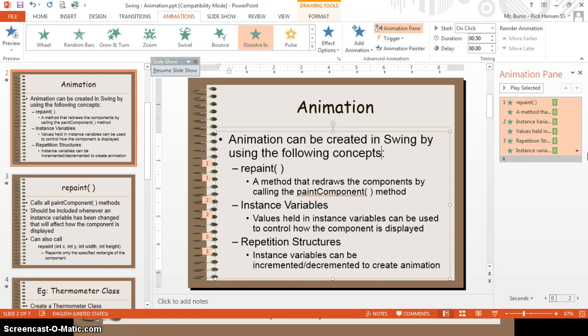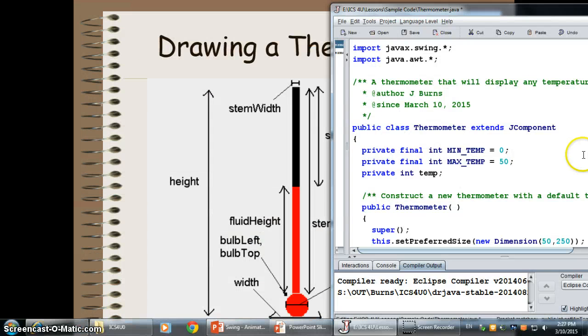If we're going to draw this out, it's going to look like this. Here's my thermometer class. It is a J component. I've created some variables, which is the minimum temperature. It is final, so my thermometer is always the lowest temperature this particular thermometer can have is zero degrees. The maximum this thermometer can have is going to be 50 degrees. I could change these values, but once I change them, they're set for the whole program, for the entire thermometer.